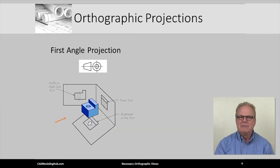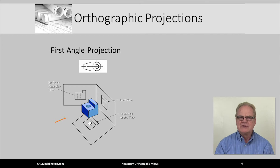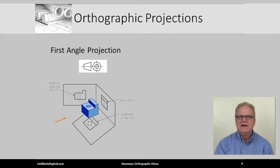We have also learned that orthographic views can be projected using either first- or third-angle projection techniques. Here we have a simple blue doorstop. The red arrow indicates the direction of sight for the front view. Using first-angle projection, front surfaces are projected to the back wall of the three-walled, partially-opened glass cube. Looking down from the top, the visible surfaces are projected to the bottom wall of this glass cube. And looking from the right side, the surfaces that are visible are projected to the left wall.